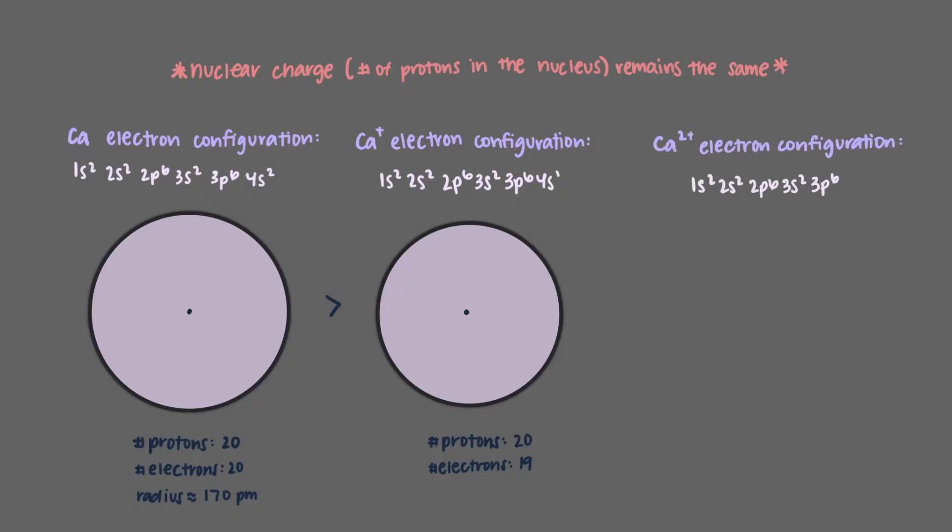As we know, the size of electron waves is directly proportional to the principal quantum number n, which tells us that the calcium 2 plus, whose size is determined by the 3p electron, will be much much smaller than calcium plus or calcium, whose sizes are determined by their 4s electrons.